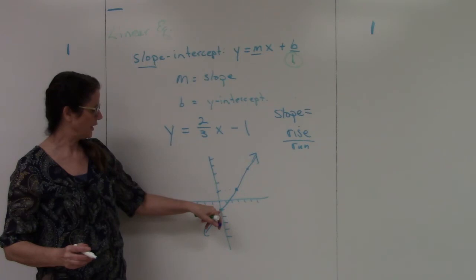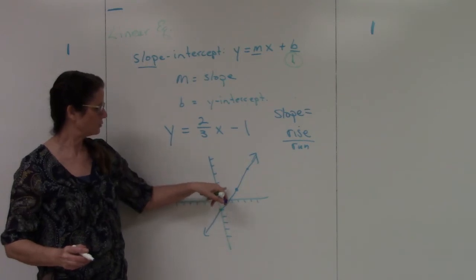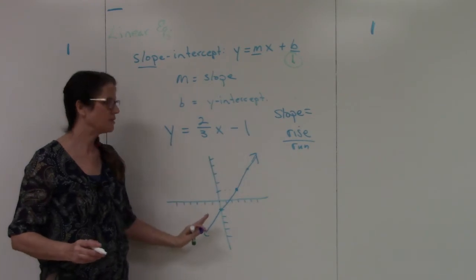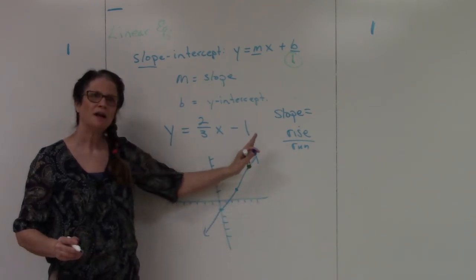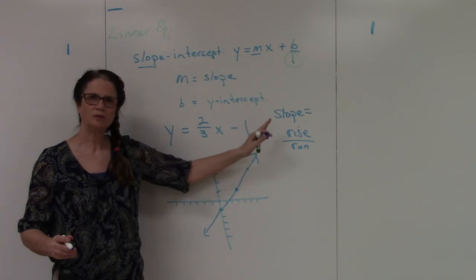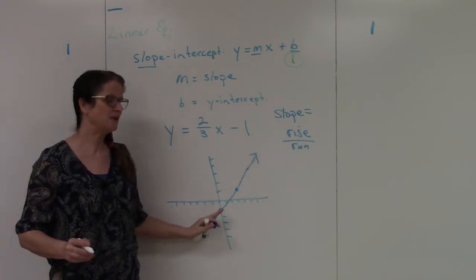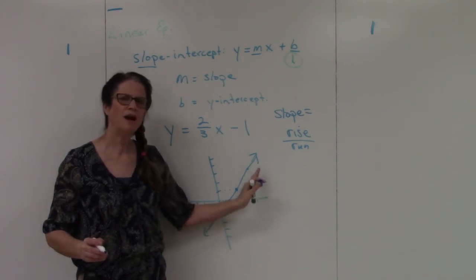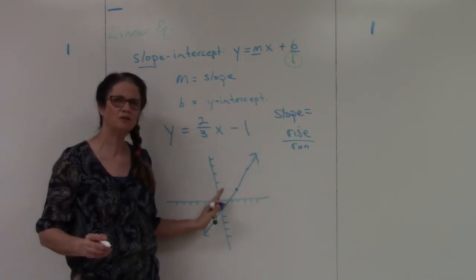From my y-intercept of negative 1, I rise 2, run 3, rise 2, run 3, rise 2, run 3. So it's a consistent slope or positive increase. And this graph is increasing in nature. The higher my x value, the higher my y value. So it's an increasing slope.